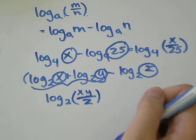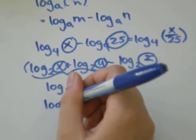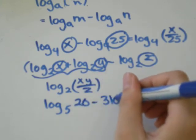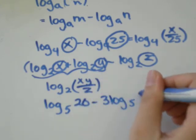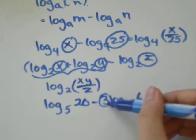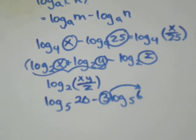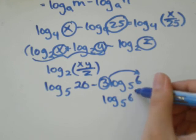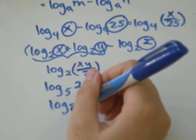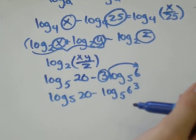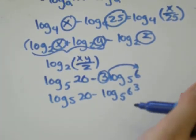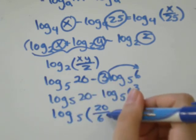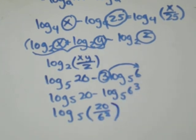You might also see the power rule. You could see log base 5 of 20 minus 3 log base 5 of 6. Now this 3 really belongs as the exponent on 6. So this should be log base 5 of 6 cubed and log base 5 of 20. This would simplify down to log base 5 of 20 over 6 cubed.